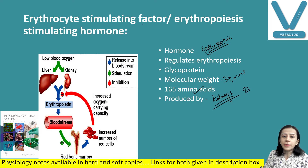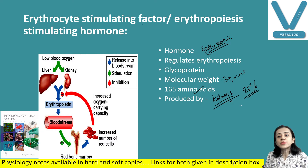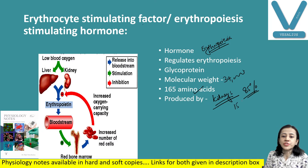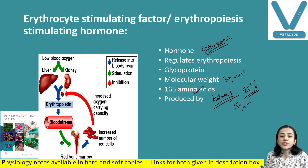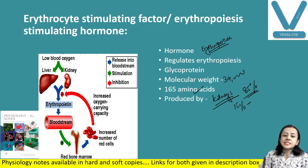Erythropoietin is produced mainly by the peritubular capillary epithelial cells of the kidney — 85% is produced there and 15% is produced by liver cells. In intrauterine life, the major site for synthesis of erythropoietin is the liver.